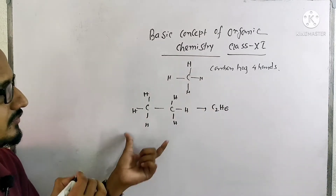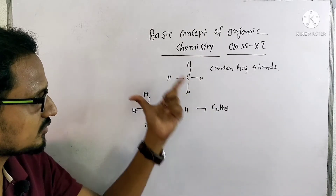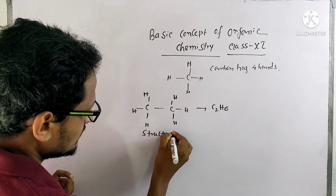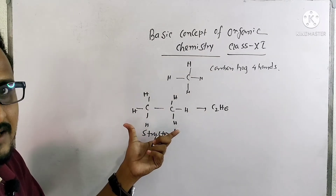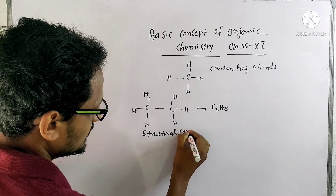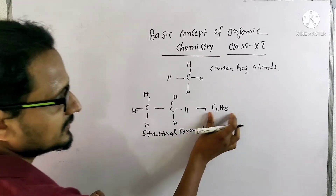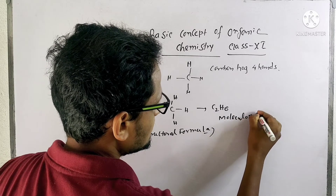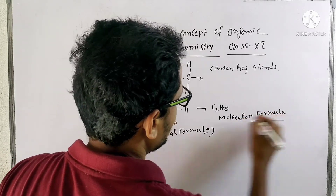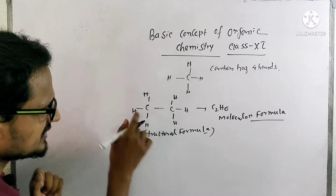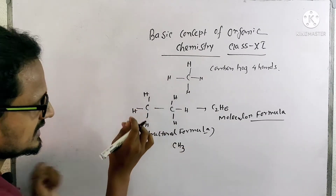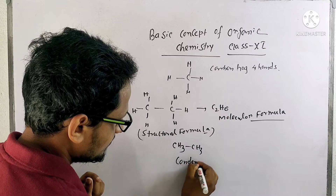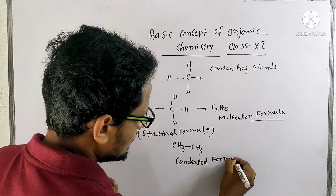So it is C2H6. When you write it showing all individual bonds, this is called the structural formula. When we represent the formula of a compound as C2H6, that is the molecular formula. But when we represent it like CH3–CH3, showing individual carbon groups and then a single bond, that is the condensed formula.